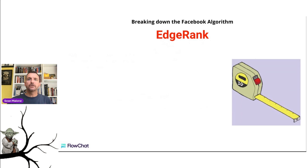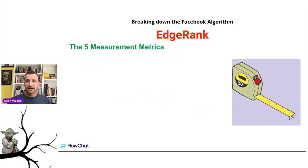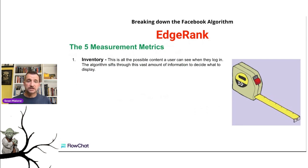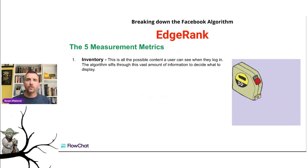Now let's get into how the measurement metrics actually apply for edge rank in the Facebook algorithm. There are five measurement metrics that the algorithm focuses on. Number one is what they call inventory — this is all the possible content a user can see when they log in. That's the inventory all over Facebook. The algorithm sifts through this vast amount of information to decide what to display, based on those three categories discussed earlier.